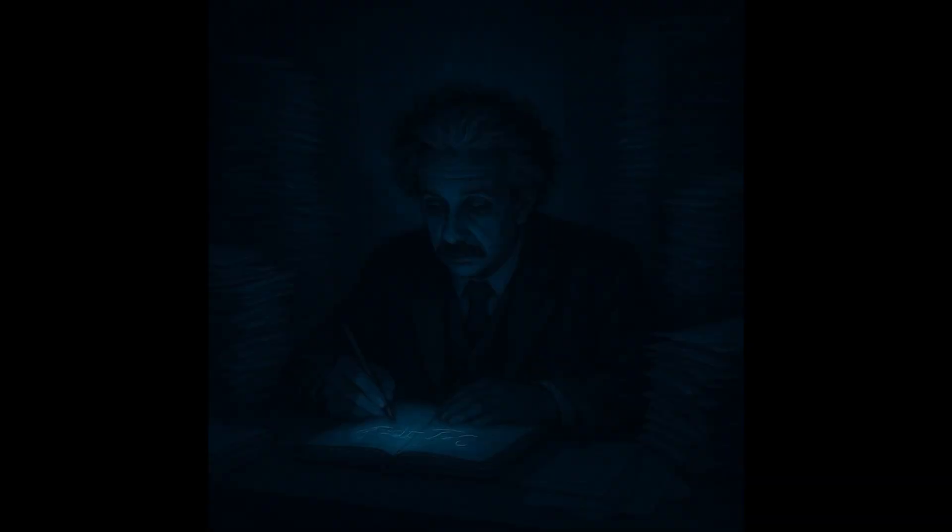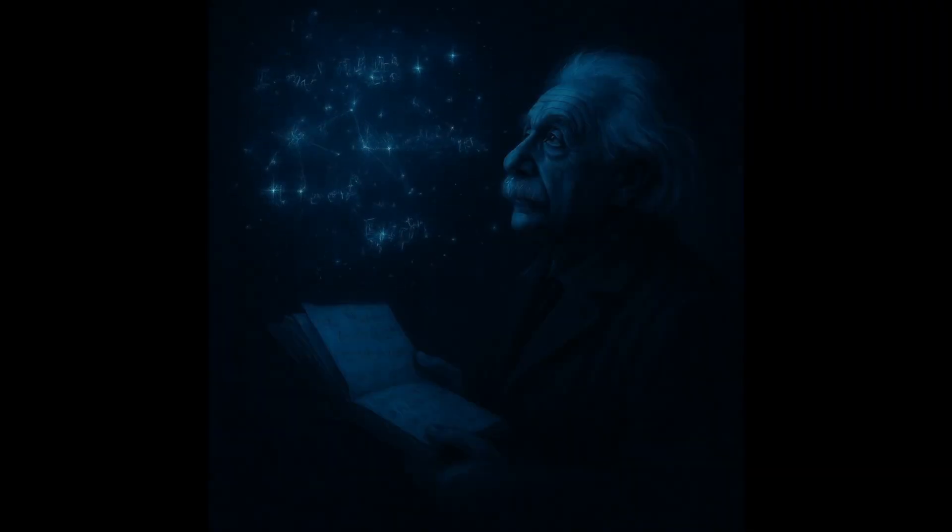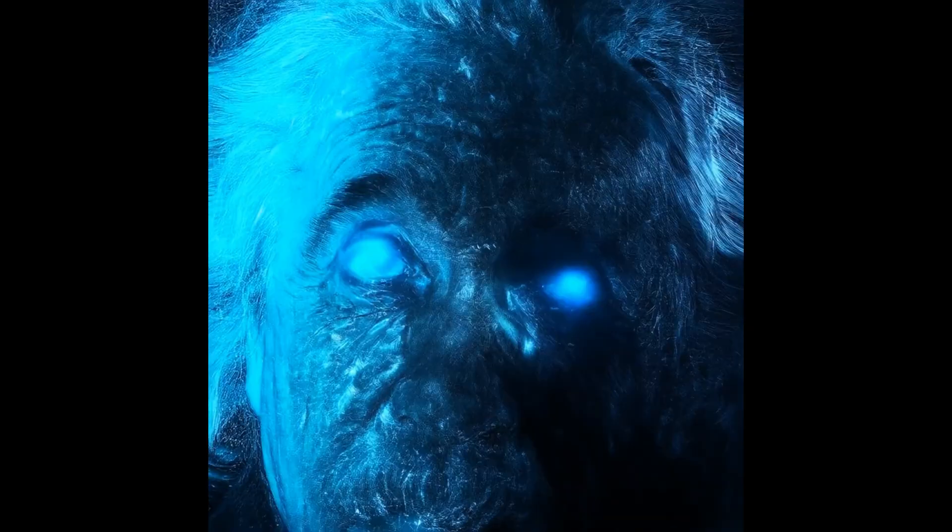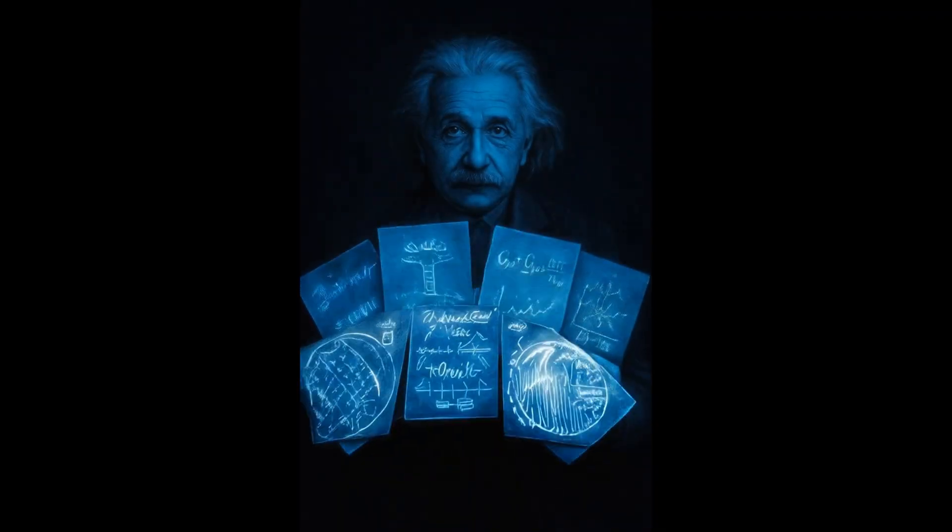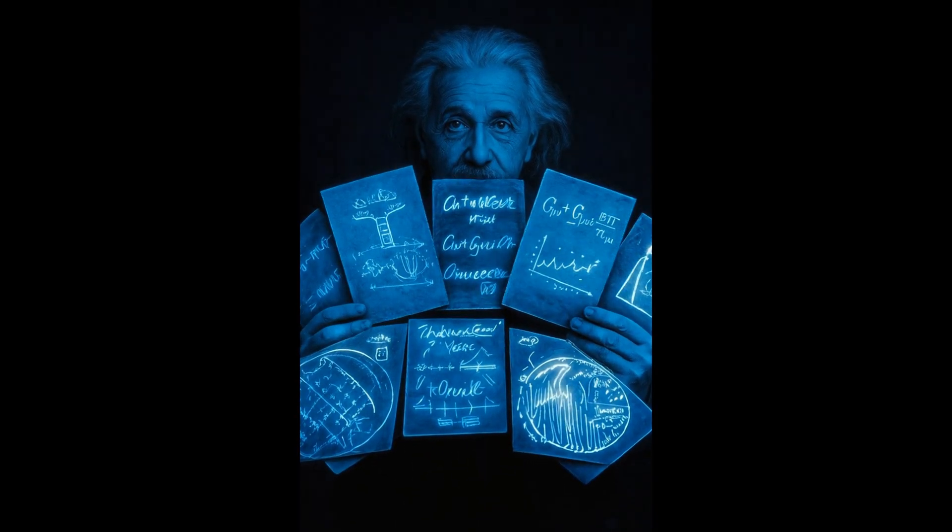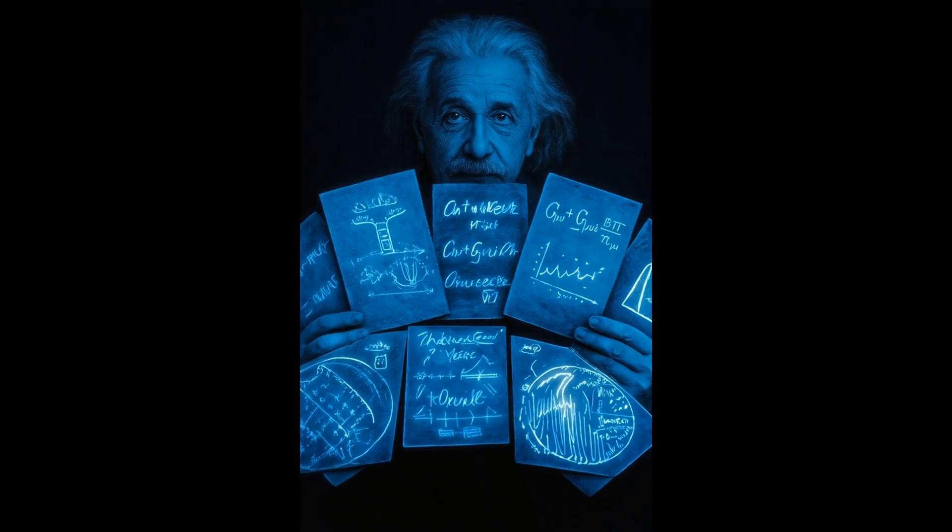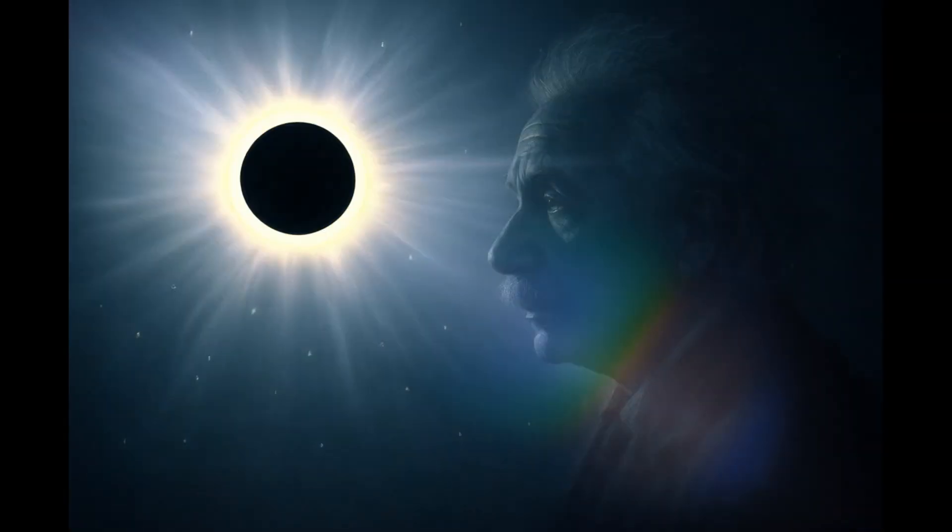Exiled from academia, he took work as a clerk in a patent office. By day, he stamped inventions of others. By night, he imagined the machinery of the universe. And in that obscurity, he forged a revolution. In 1905, in one miraculous year, he unleashed four papers that shattered physics. Space and time bent. Energy and mass became one.